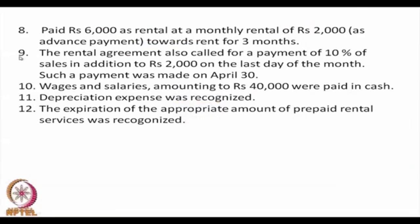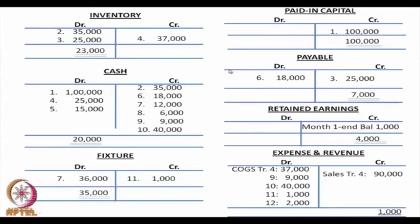Transaction 9: in addition to the Rs. 2,000 monthly rent, the agreement calls for 10% of sales paid on the last day of the month. Sales were Rs. 90,000, so 10% is Rs. 9,000. A payment of Rs. 9,000 was made on April 30th — cash is credited and rental expense is debited Rs. 9,000.